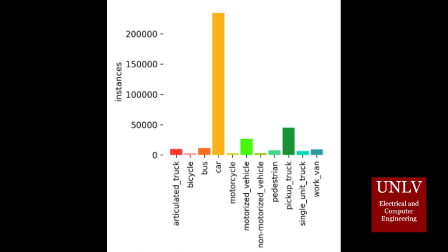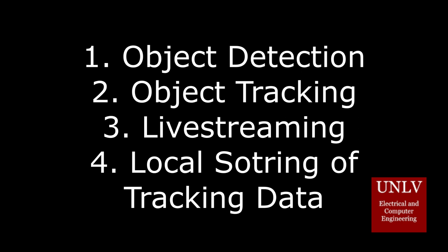In cases where the vehicle may be too far or obscured to be detected, the MioVision TCD allows two additional classifications: motorized vehicles and non-motorized vehicles. The number of instances per type of vehicle in the MioVision TCD highlights a clear distribution skewed towards cars. However, this can be desirable if the majority of vehicles passing through roadways are cars.